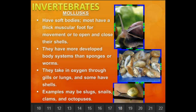Next are mollusks. Every kid knows what a mollusk is — they just might not call it that. A snail is a mollusk, as are clams, octopus, and slugs. They have a soft body but a big, thick, muscular foot that allows them to move or to open and close their shell. They have a more developed body system than a sponge or worm, take in oxygen through gills or lungs, and some have shells.